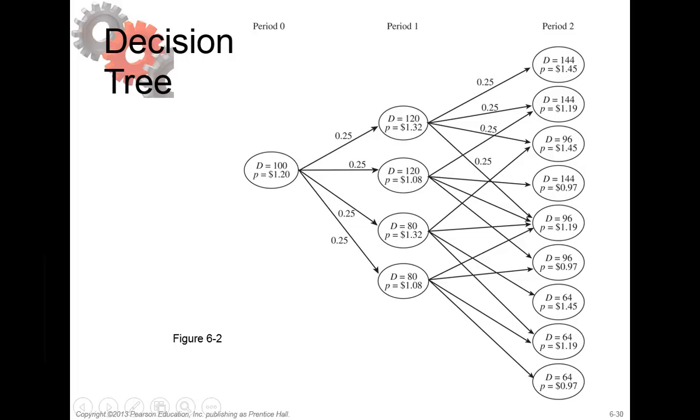When you put this all into a graph we see the decision tree. You see the decision tree for period 0, it's over here. For period 1, and for period 2. As we said, the probability is 50% that the demand rises from 100,000 to 120,000. That's what you see here. 0.25 plus 0.25 makes 50%.